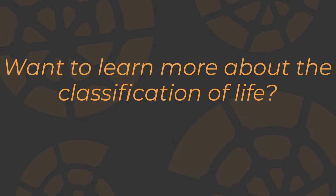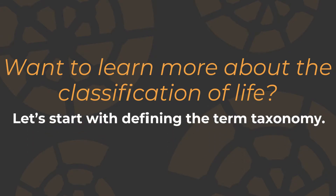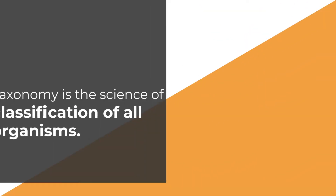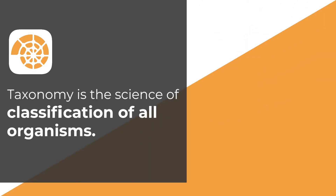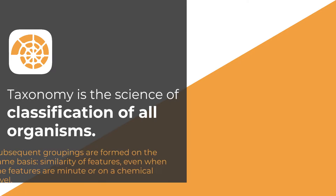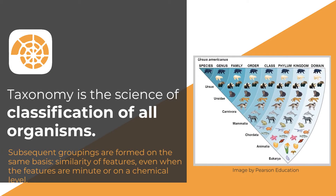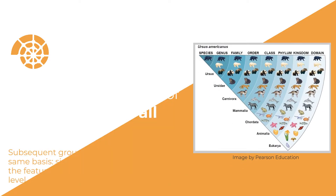Want to learn more about the classification of life? Let's start with defining the term taxonomy. Taxonomy is the science of classification of all organisms. Subsequent groupings are formed on the same basis: similarity of features, even when the features are minute or on a chemical level.